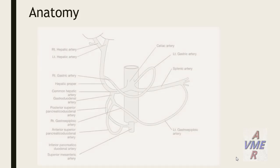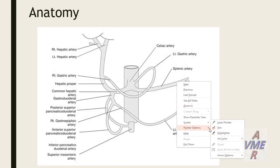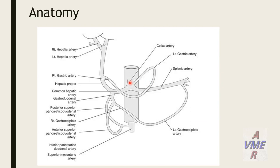First, we start with the anatomy of the mesenteric vascular system. The celiac trunk starts at the upper border of L1 and gives branches: the splenic artery, left gastric artery, and common hepatic artery, which gives the hepatic proper, right and left hepatic arteries. We also have the gastroepiploic artery and the pancreatic duodenal artery. The superior pancreatic duodenal artery anastomoses with the inferior pancreatic duodenal artery from the superior mesenteric artery.